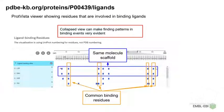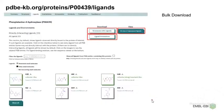For example, you can see that these particular two ligands have similar binding sites and the same scaffold, and you can also identify the common binding residues. You can download the data using the download buttons, including all the ligand annotations.